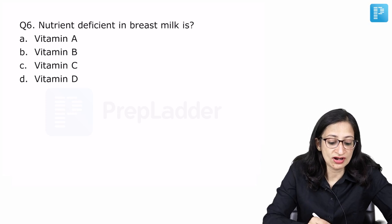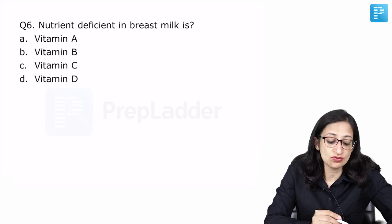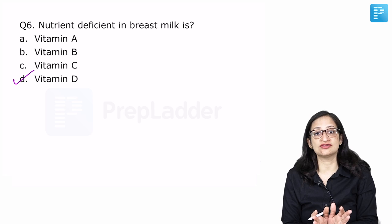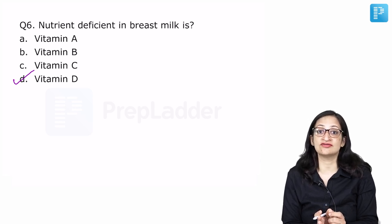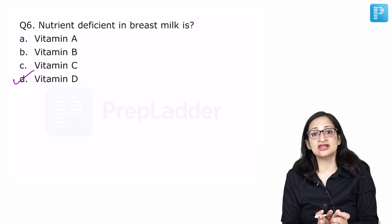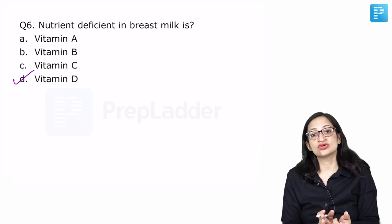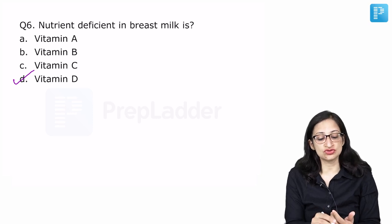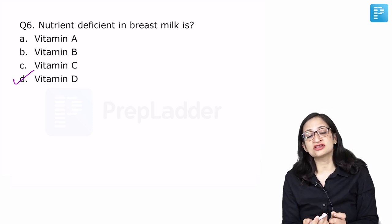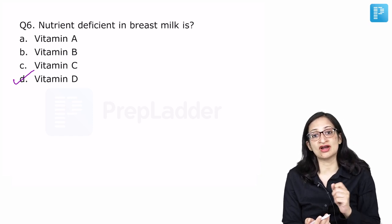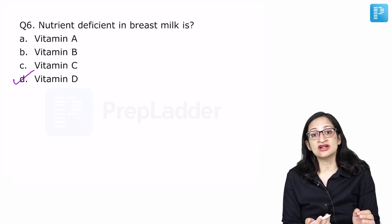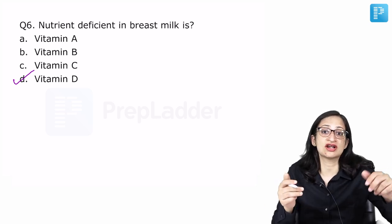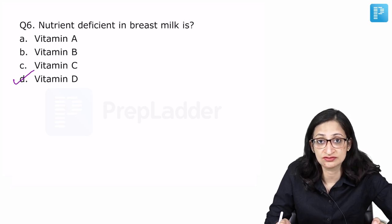Nutrient deficient in breast milk is vitamin A, B, C, D. Out of these, vitamin D is deficient in breast milk and that is why it is recommended that for all babies during infancy, that is during first year of life, we need to supplement 400 international units of vitamin D every day. Remember both vitamin D and vitamin K are deficient in breast milk. If both are present as options then you can either choose the option which has both vitamin D and vitamin K or you can choose vitamin D over vitamin K. Now, because breast milk is deficient in vitamin K also, 1 mg intramuscular dose of vitamin K is to be given to all babies at birth to prevent hemorrhagic disease of newborn or vitamin K deficiency bleeding. However, cow's milk if you look at is deficient in vitamin C and cow milk fed babies have more chances of having scurvy.